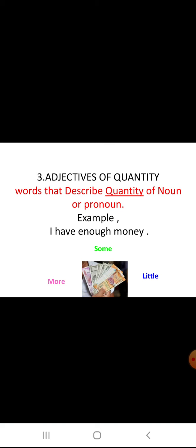Adjectives of quantity are words that describe the quantity of a noun or pronoun. They do not show the exact amount. For example, I have enough money, or I have some money, or I have little money, or I have more money — it is not expressing the exact amount. Adjectives of quantity answer the question: how much?